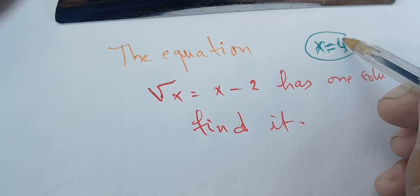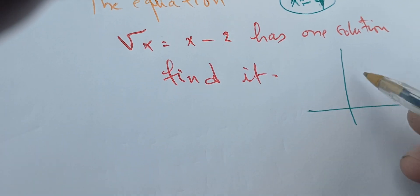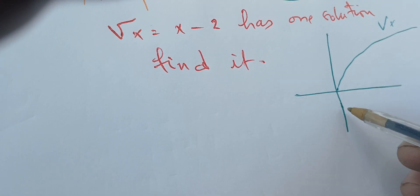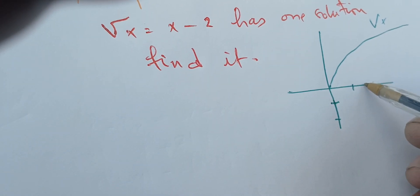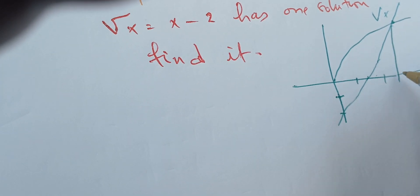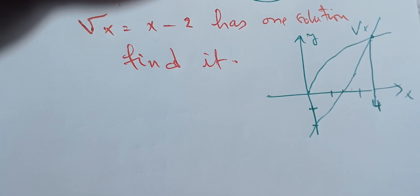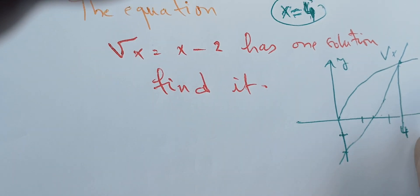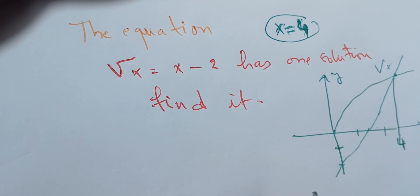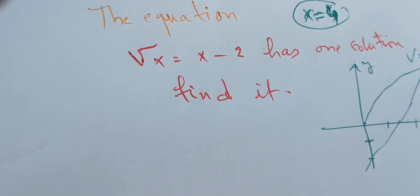We can also use graphing. Here is the graph of the square root of X and X minus 2. They meet at the point where X equals 4. So graphically we can see the solution. However, when we have large numbers, guessing and graphing are not reliable, and algebra is the only way.